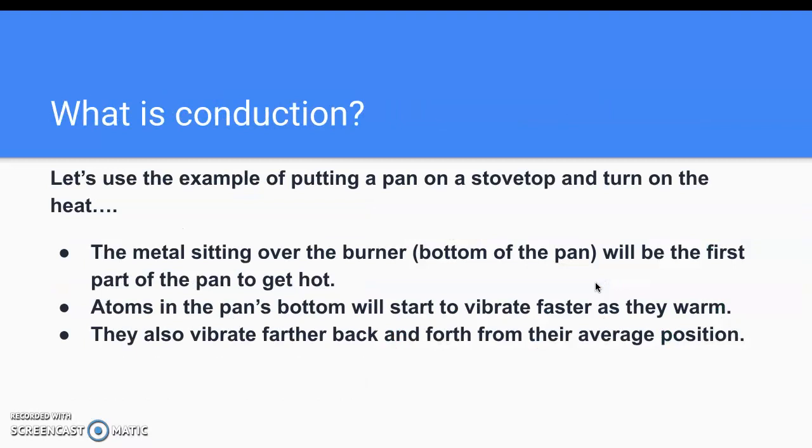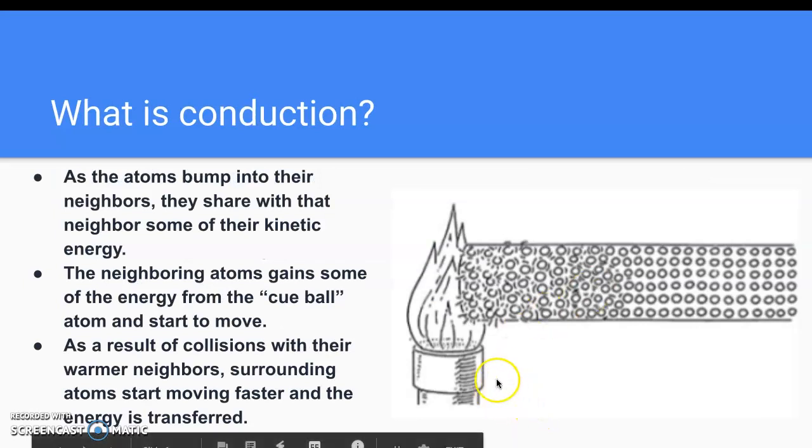So what is conduction? We're going to use this example of putting a pan on a stovetop and turning on the heat. We have metal that is sitting over the burner, the bottom of the pan. And that will be the first part of the pan that gets hot because it's in direct contact with the heat source. The atoms that are in the bottom of this pan will start to vibrate faster as they warm up. And as they gain that thermal energy and start to vibrate faster in place, they'll transfer that energy to particles surrounding them when they bump into those particles.